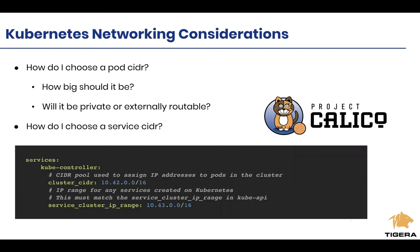Calico gives you an option to create what we call IP pools that allow you to pick different pools or slices of the CIDR for different purposes. For example, you can give a set of IPs from a specific subnet to a specific set of pods running in a specific area of your cluster, whether it's a different rack, a different type of workload, or a different namespace. Calico provides a unique way of selective, more advanced mapping of pods to namespaces or to where they're located within the data center.